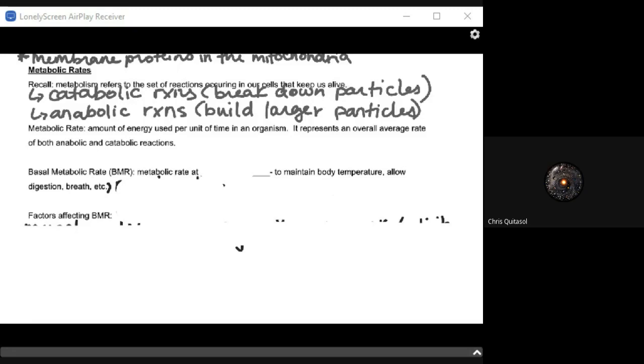Any type of catabolic or anabolic reaction that's either breaking down particles like in catabolic reactions or building larger particles or molecules with that anabolic reaction, those two things make up what's called metabolism. It's those set of reactions that basically keep us alive or keep a cell alive or cells alive. The metabolic rate is the amount of energy used per unit of time in an organism. It represents an overall average rate. I can't stress how important it is to say the overall average rate of both anabolic and catabolic reactions.